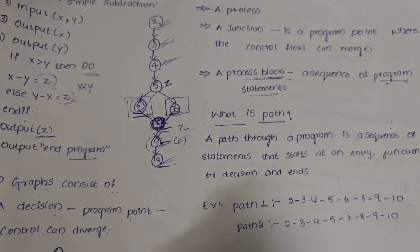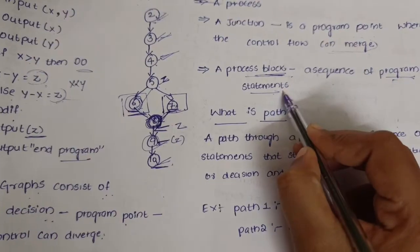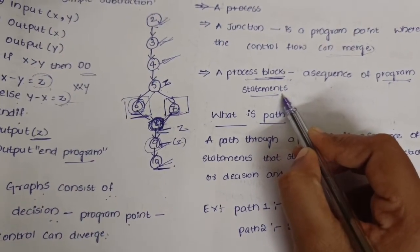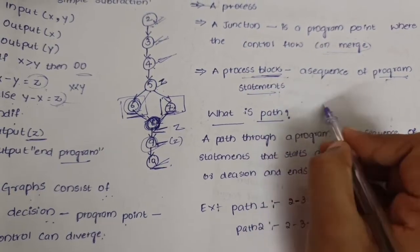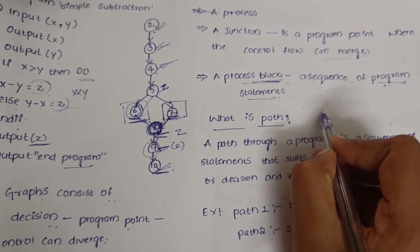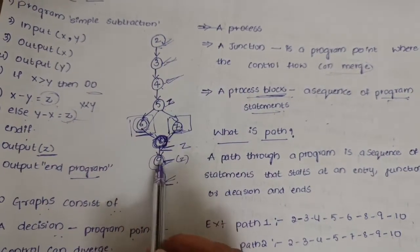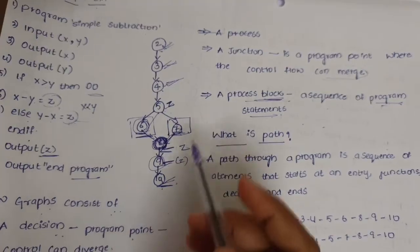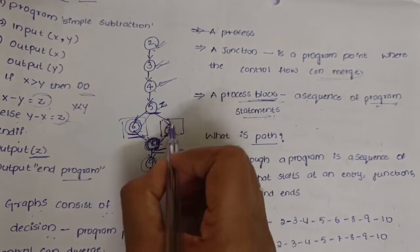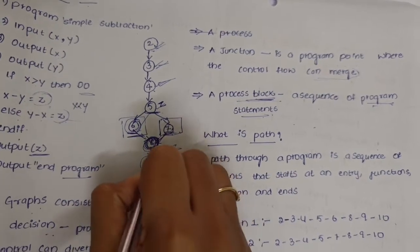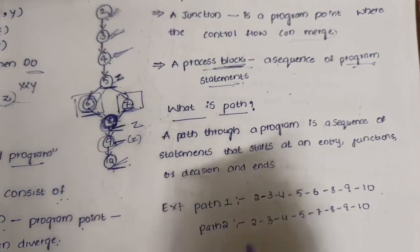A flow graph also consists of process blocks, which are sequences of program statements that do not involve merging, junctions, or decision points. In the example, nodes 2, 3, 4, 6, 7, 9, and 10 are process blocks. Node 5 is a decision and node 8 is a junction.